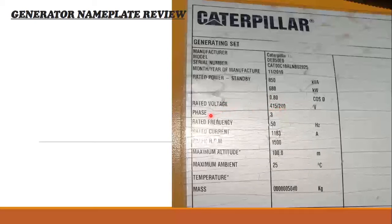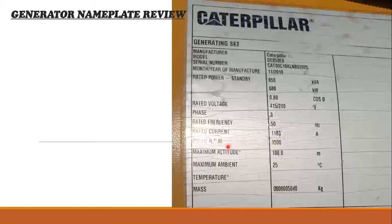The number of phases is 3. Rated frequency is 50 Hz. Rated current is 1183 amperes at 415 volts three-phase. Rated speed is 1500 RPM. Maximum altitude is 100 meters.